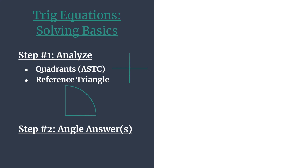The second step will be to put together what we've analyzed in step one. We'll find our angle answers, and we'll talk about two ways to do this. First, we'll do it on the unit circle from zero to two pi, but we'll also see how to take that and write solution equations for all solutions.